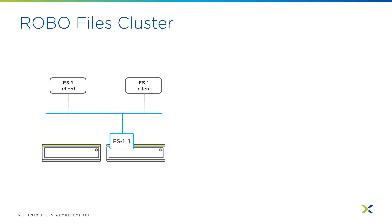A single node instance is a fully featured file server — you get all the benefits of Nutanix Files — but one thing to keep in mind is that they do not scale out, so they'll always be made up of a single file server VM.